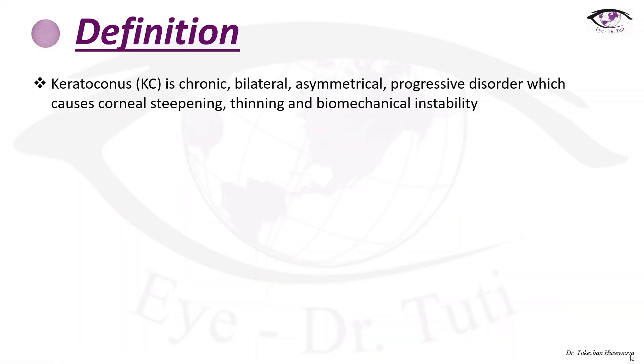Definition. Keratoconus is a chronic bilateral asymmetrical progressive disorder which causes corneal thinning and biomechanical instability.